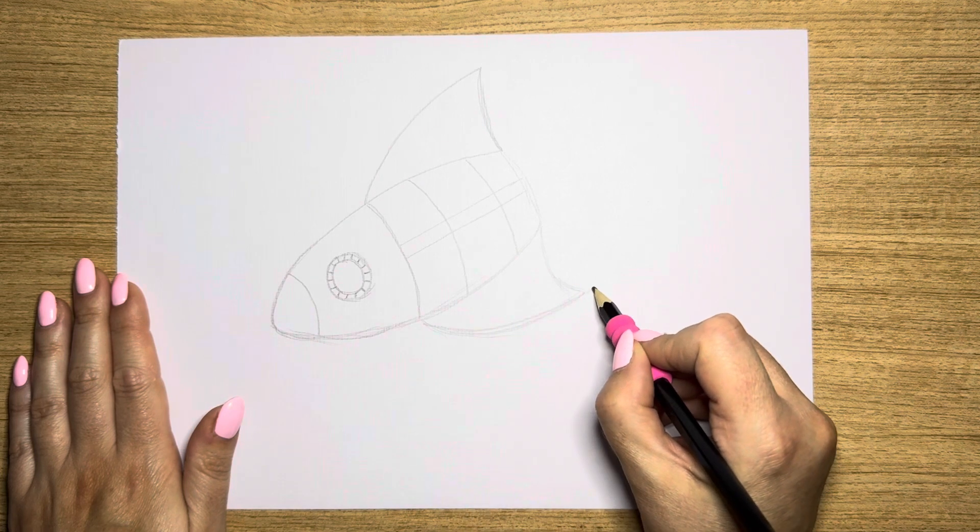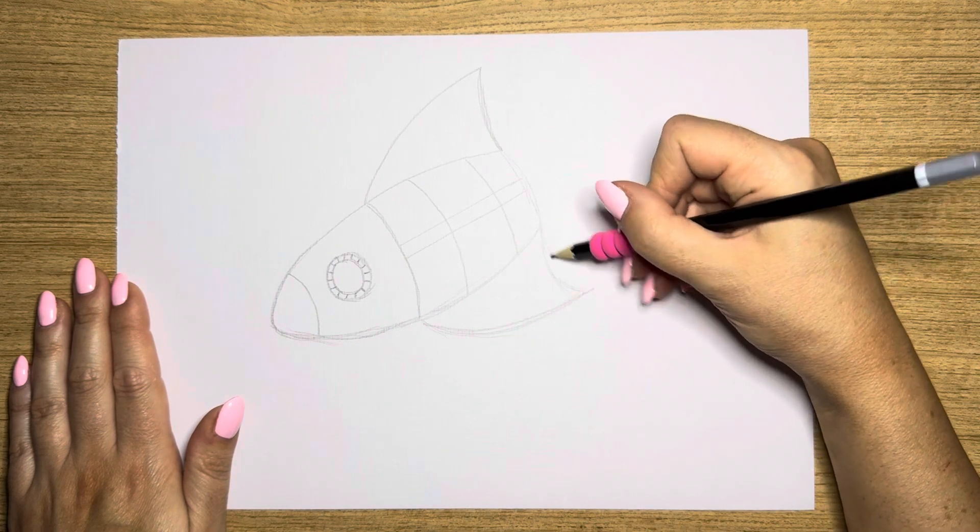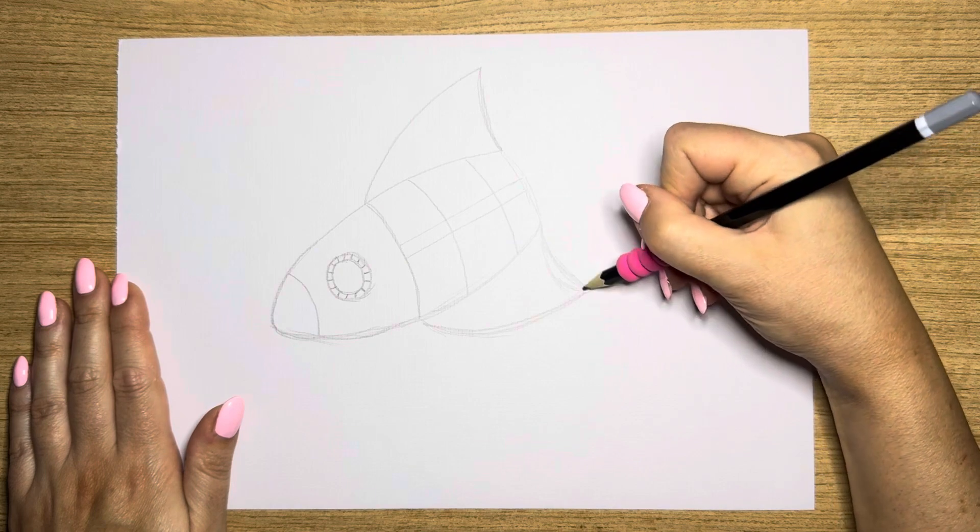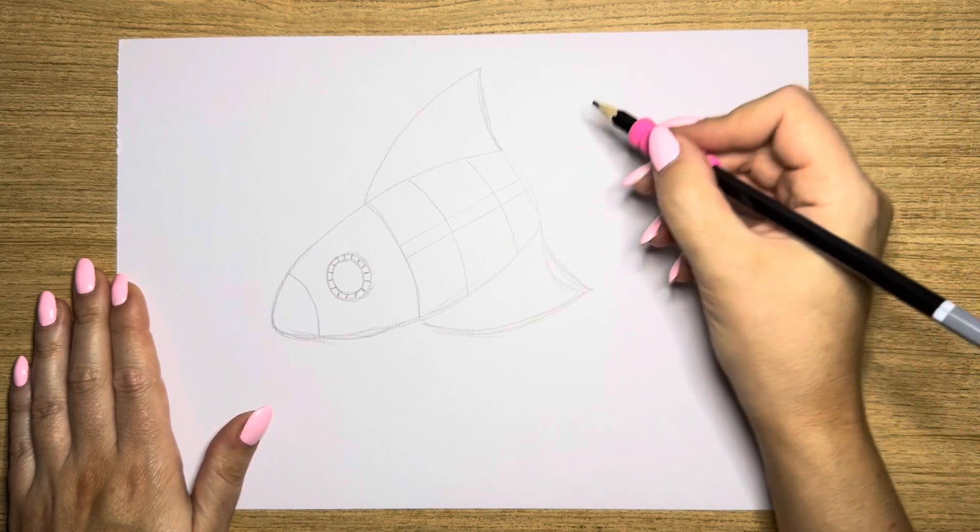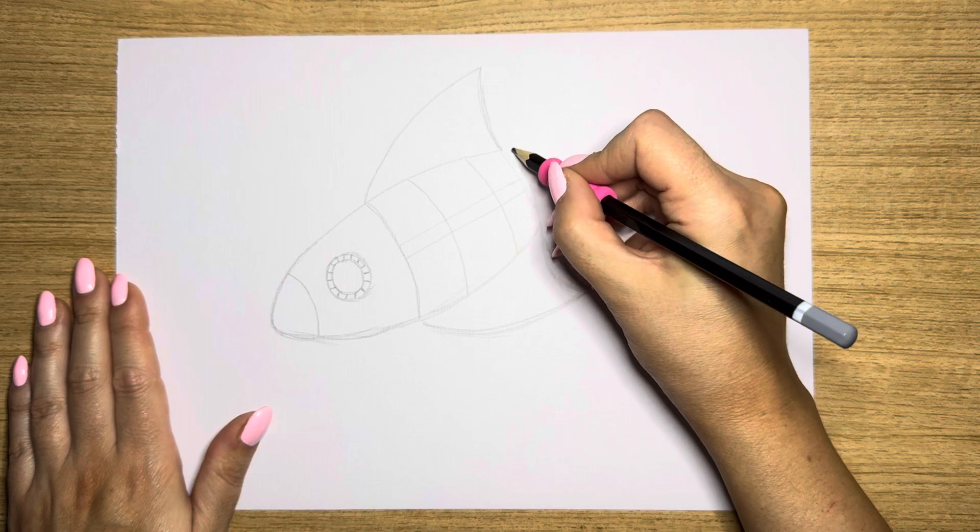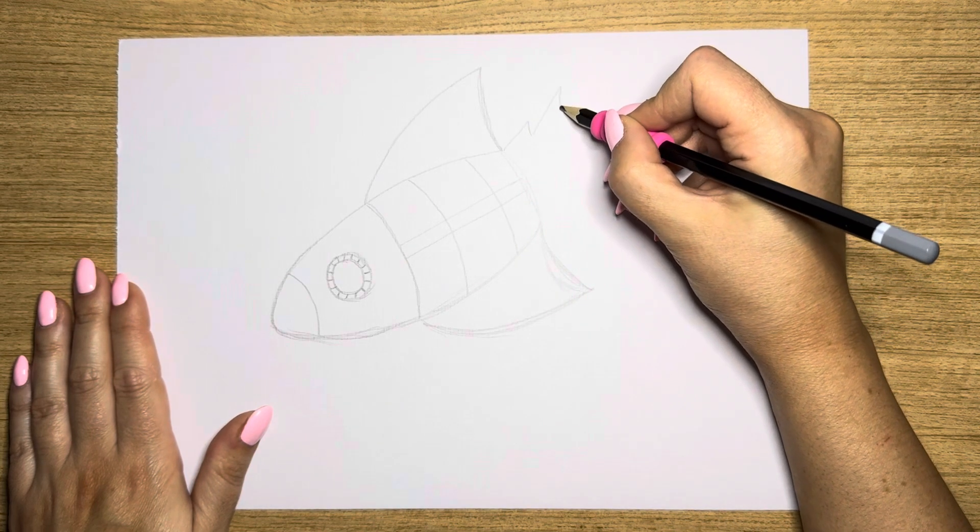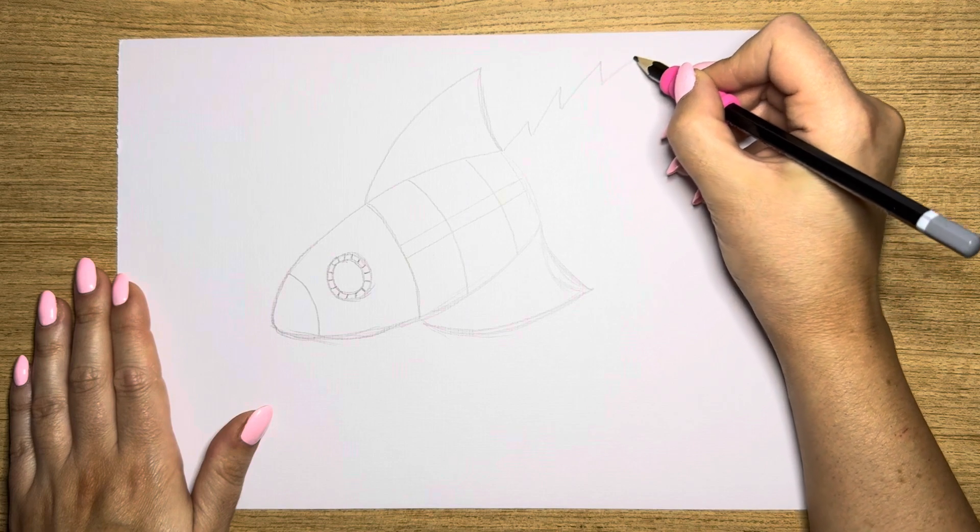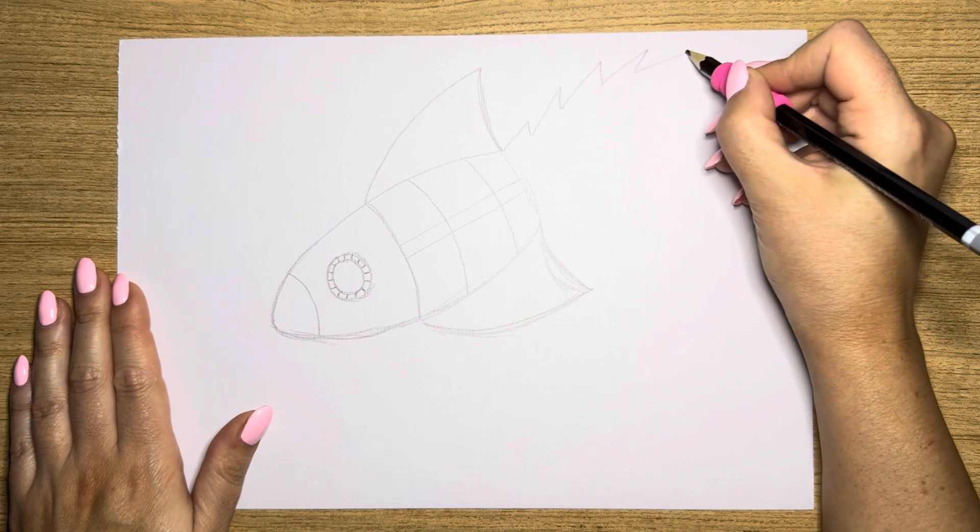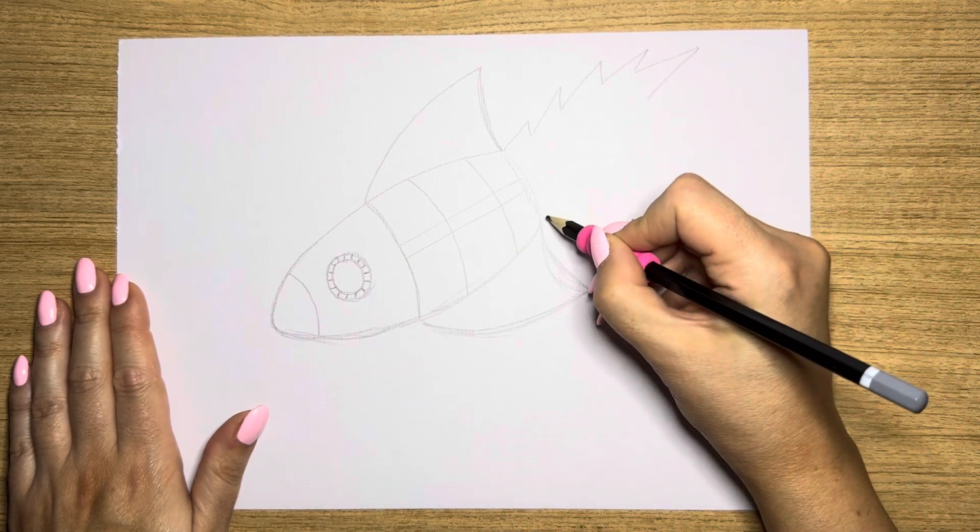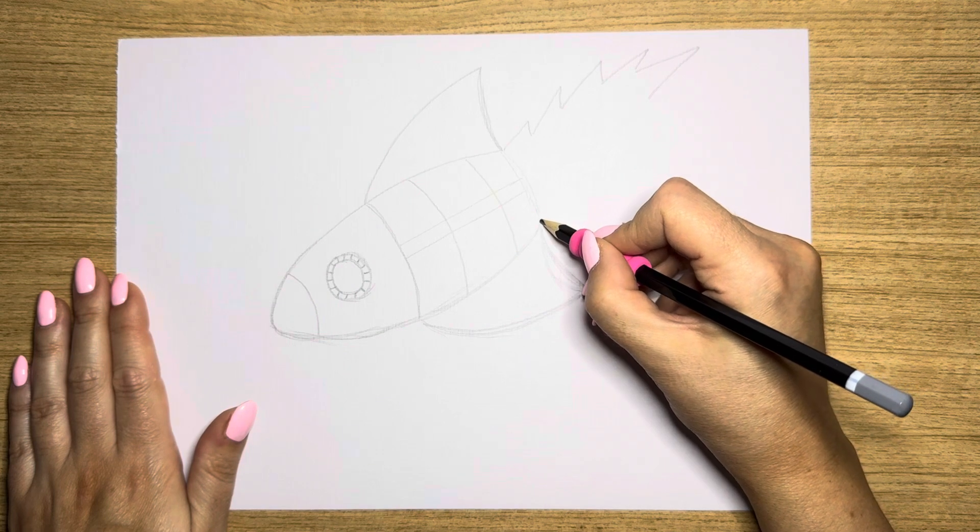Then what I'm going to do is the flames out the back. Now you can make your flames look however you like. I like them nice and jagged and lots of lines. So I'm going to do one, two, three, four, five, and then we're going to do the same on the other side.